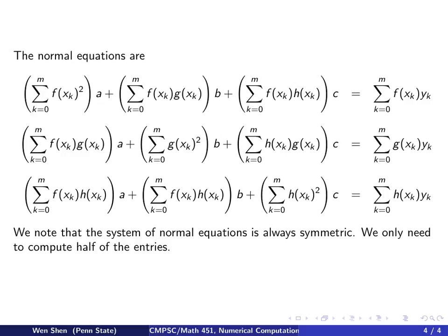So if you write it as a matrix vector form, like a matrix A times your unknown vector x equal to a right-hand side b, you see that your A matrix is symmetric.